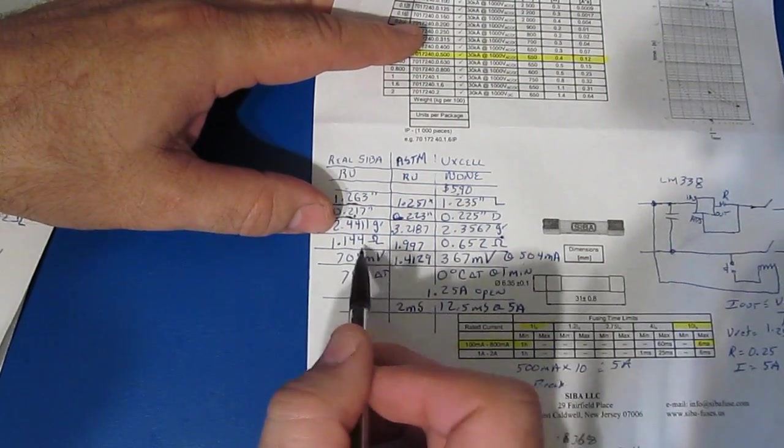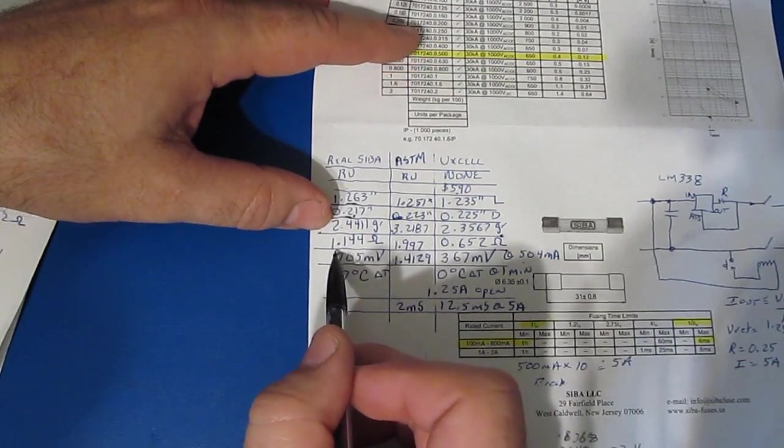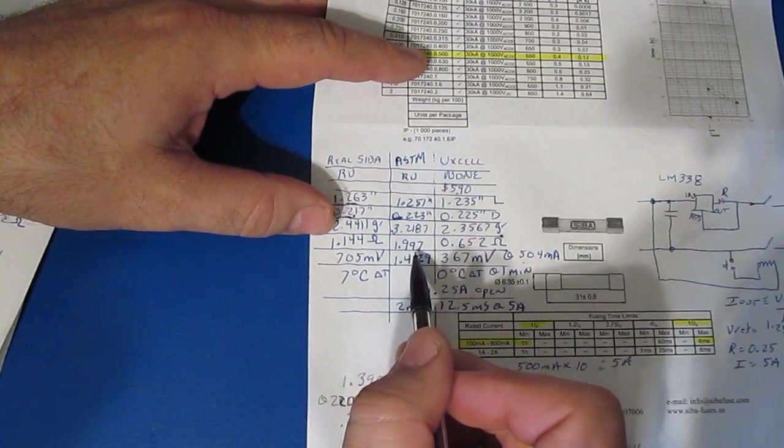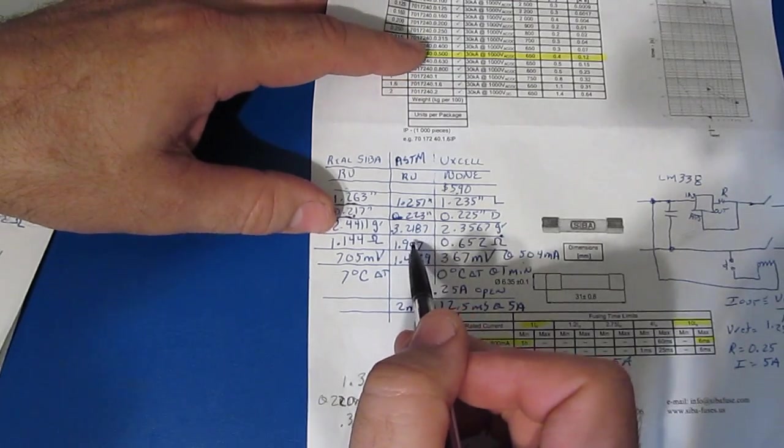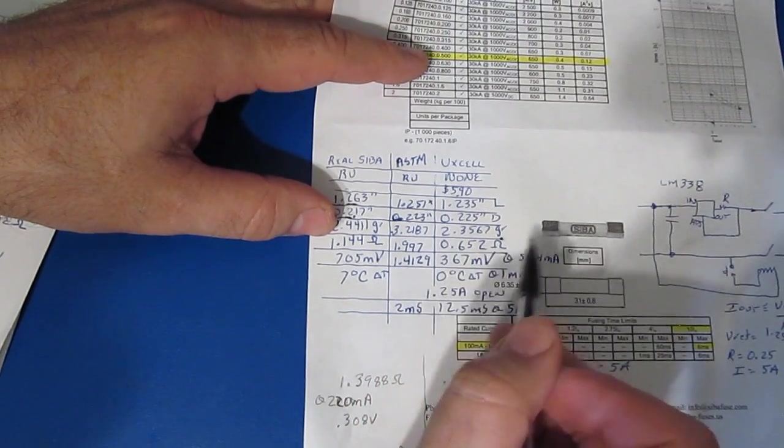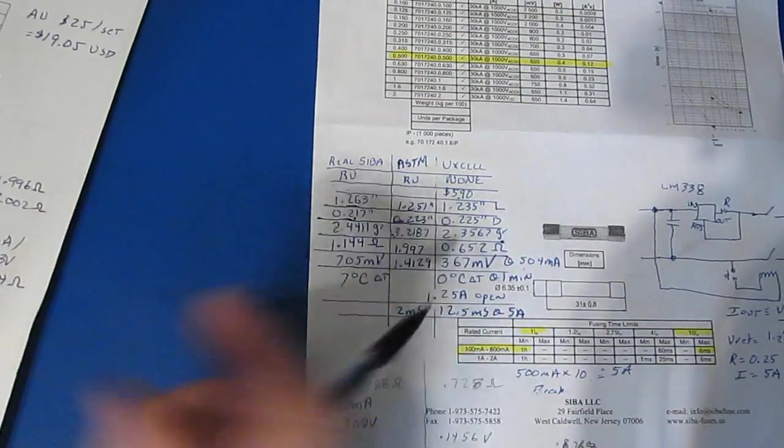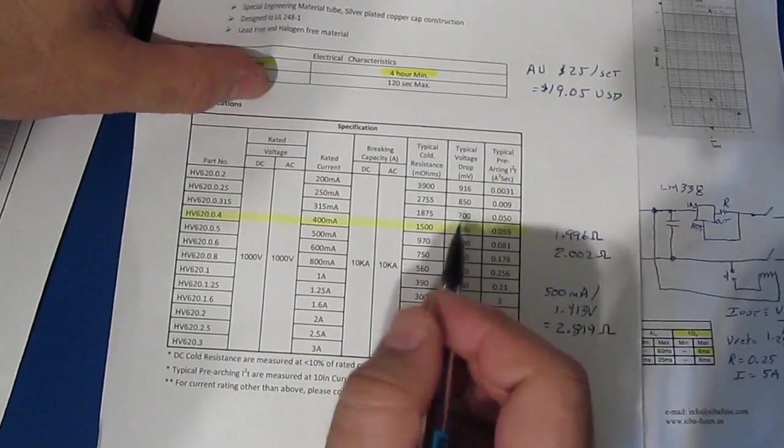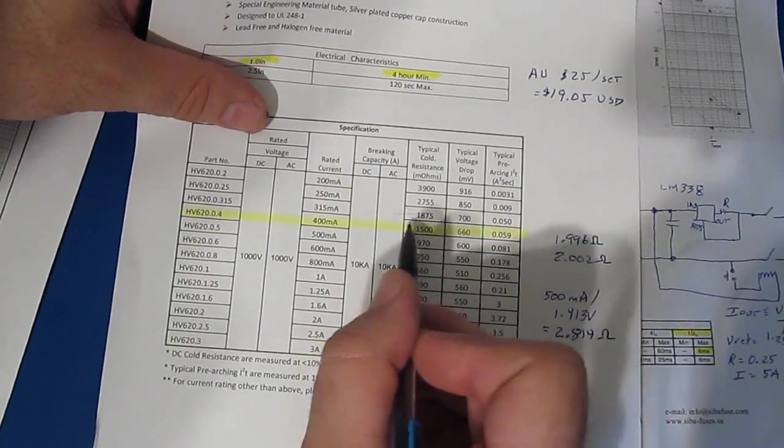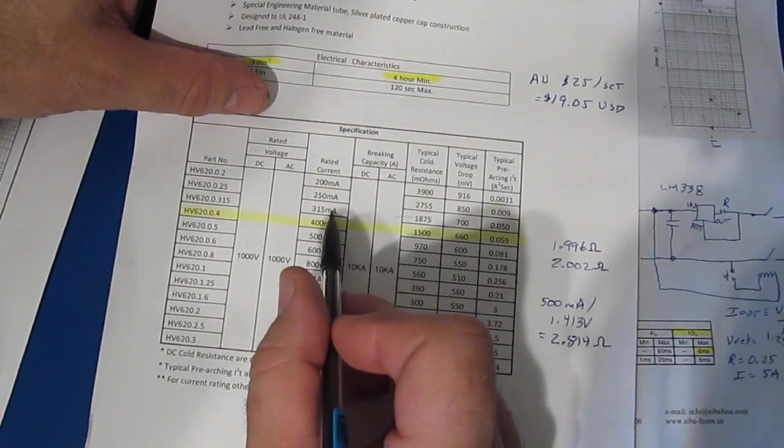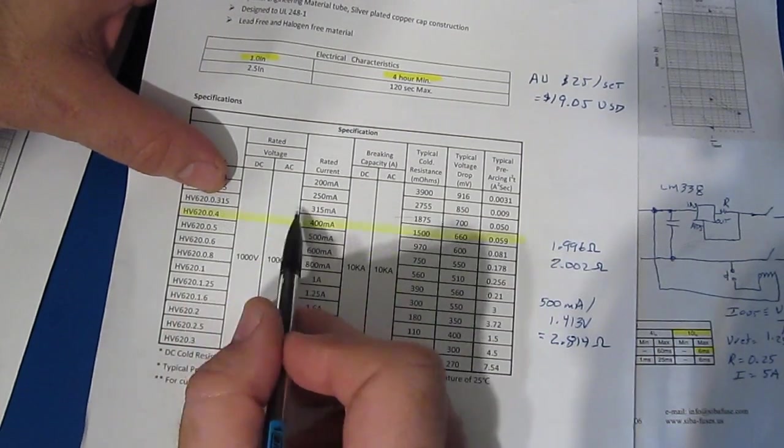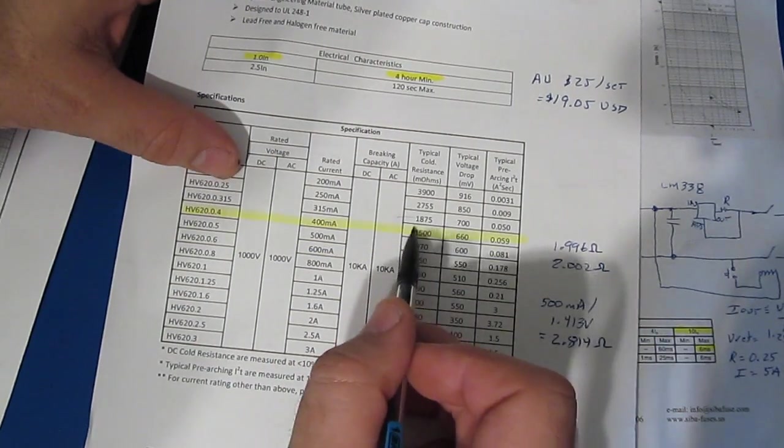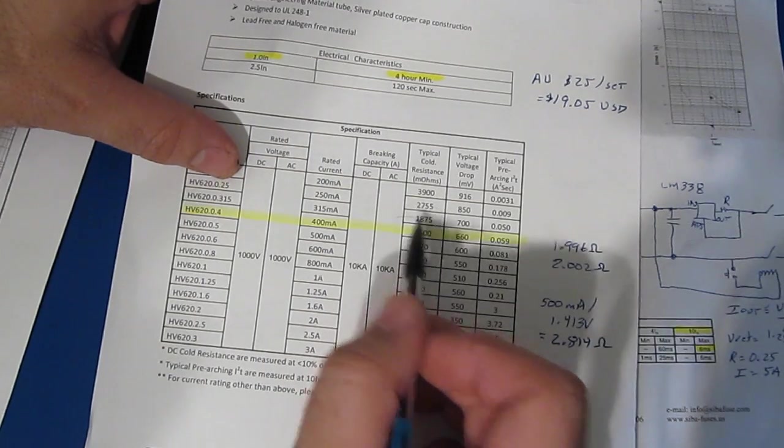So if we look at the DC resistance, again this is using my 34401, I measured 1.44 ohms for the SIBA, 1.997 or roughly 2 ohms for that ASTM and 0.65 ohms for that UXL. So what I'm wondering is if this fuse is even the right one or is this marked wrong, because the next value up you can see is 1875 and that's a 315 milliamp fuse. Of course the fuse is marked for the 400 milliamp device, I'm just surprised that the resistance is this much higher. You know we're even beyond this by quite a bit.